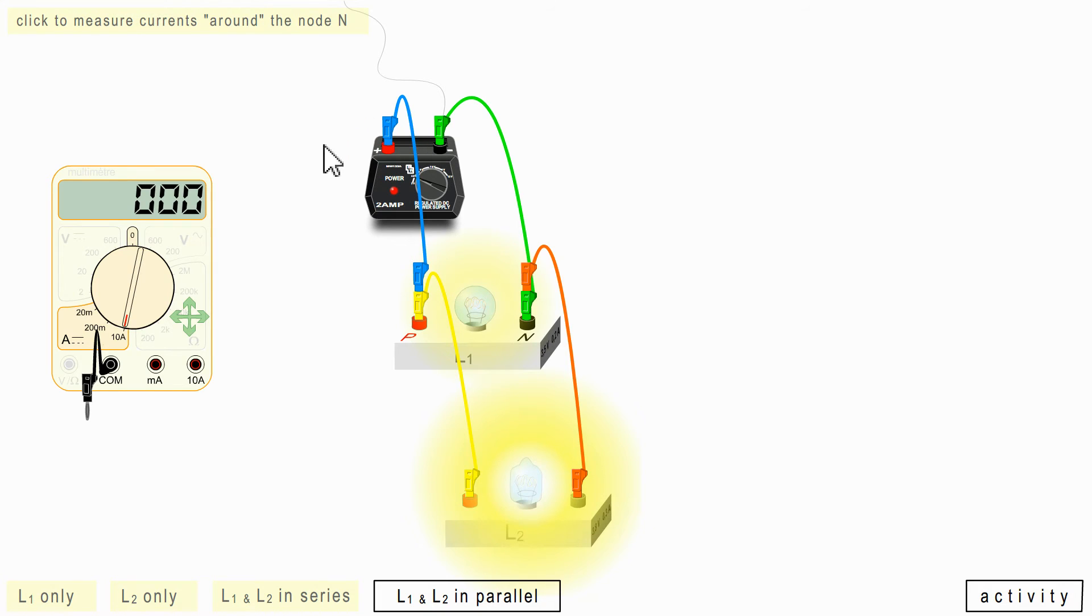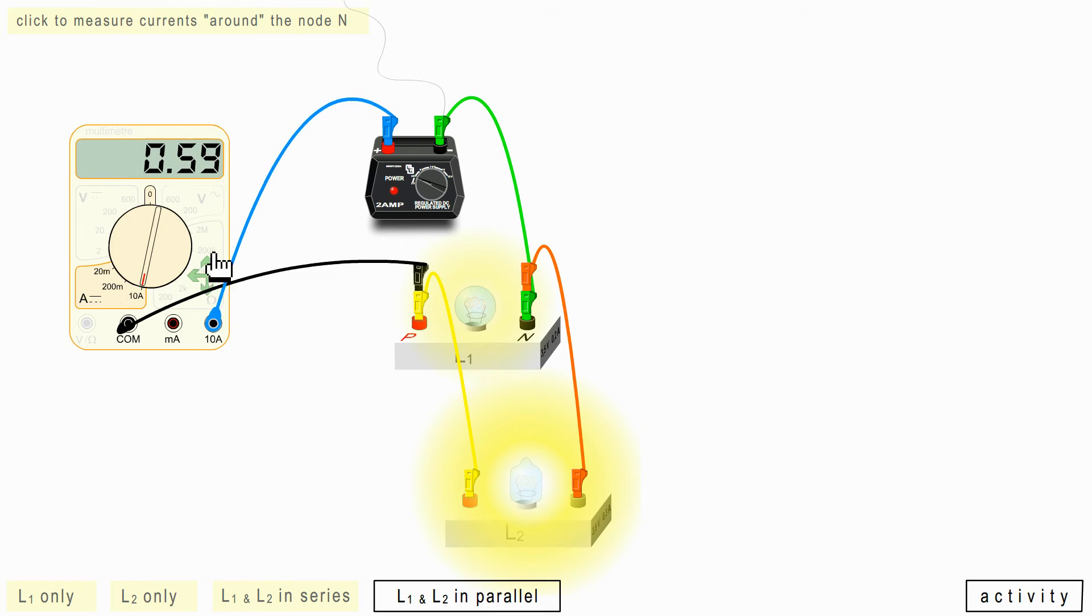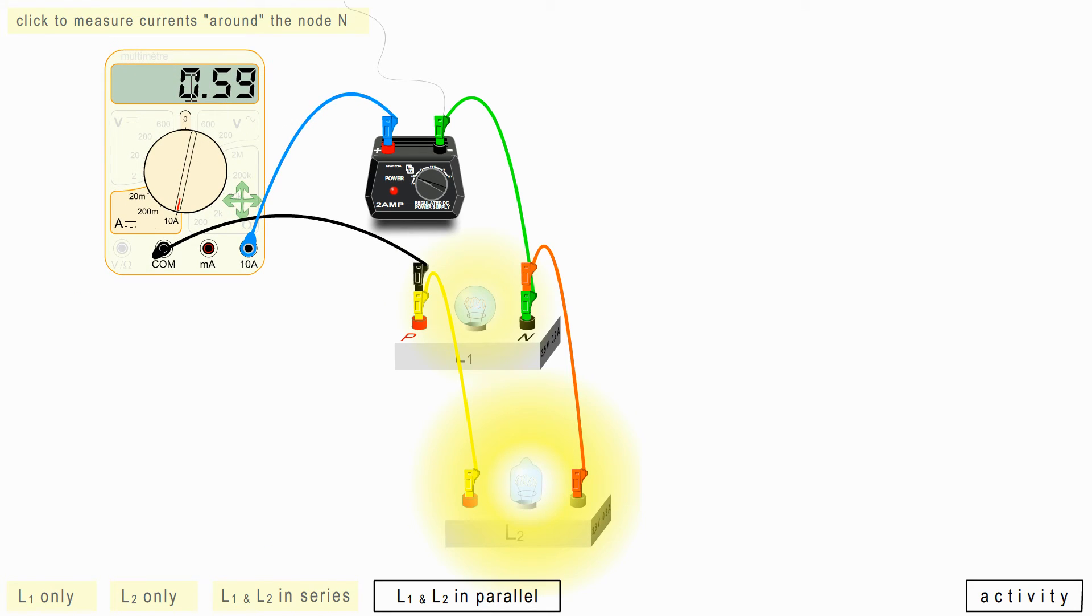Second activity. When the lamps are in parallel, let's first measure the current in the main branch. I connect here. I find 0.59 amps.